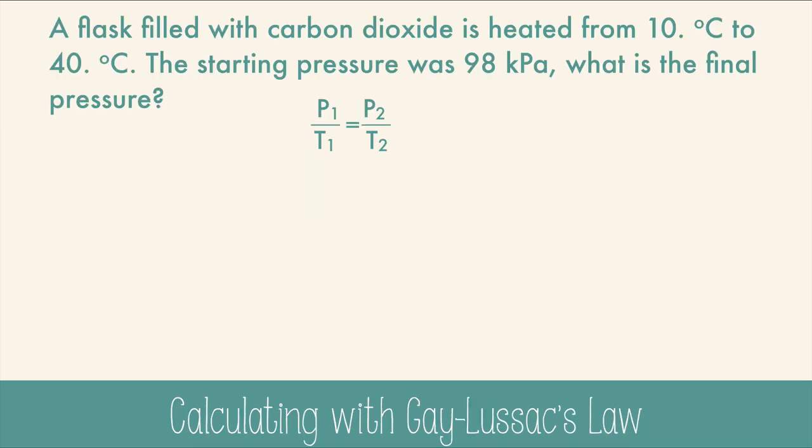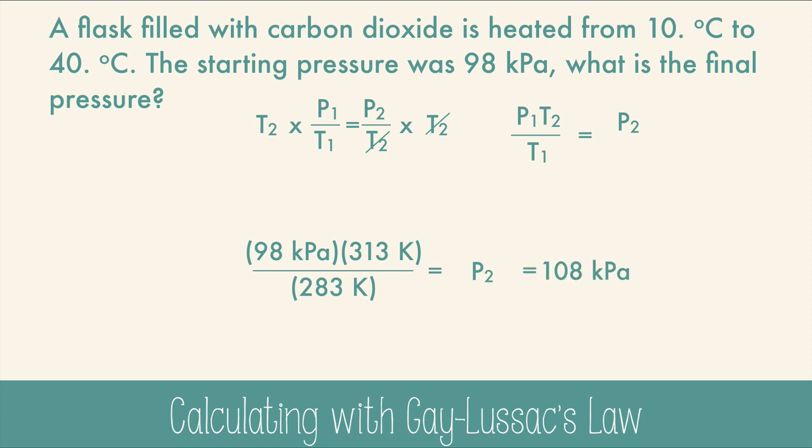Let's try a problem. A flask filled with carbon dioxide is heated from 10 degrees Celsius to 40 degrees Celsius. The starting pressure was 98 kilopascals. What's the final pressure? We're using Gay-Lussac's law, and we need to find the final pressure. So let's rearrange the equation first. We'll just multiply both sides by T2 and clean it up. Now we'll just fill in the data and calculate. But be careful. Use Kelvin instead of Celsius, and make sure the final temperature is on top and the initial is on the bottom. And then you get an answer of 108 kilopascals, or if you use sig figs, 110.